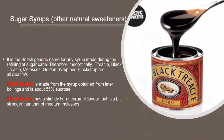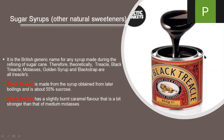Now there are sugar syrups which are natural sweeteners. The first one is black treacle. It is a British generic name for any syrup made during the refining of sugar cane. Theoretically, treacle, black treacle, molasses, golden syrup, and black strap are all related. Black treacle is made from the syrup obtained from later boilings and is about 55 percent sucrose. It is partially inverted and filtered molasses. Black treacle has a slightly burnt caramel flavor that is a bit stronger than that of a medium molasses.